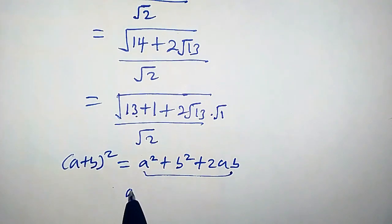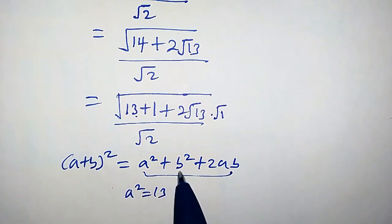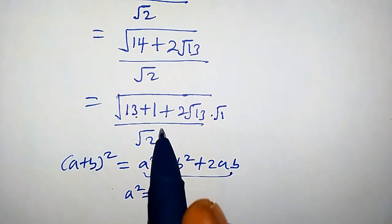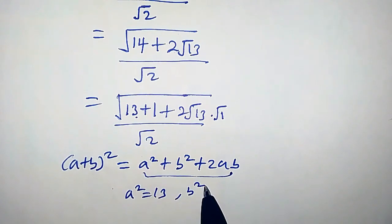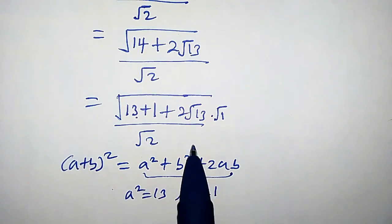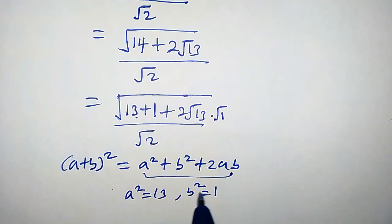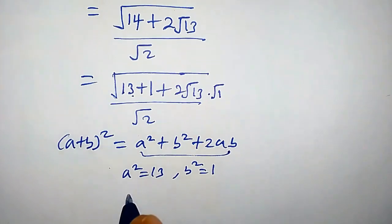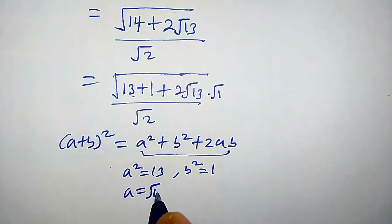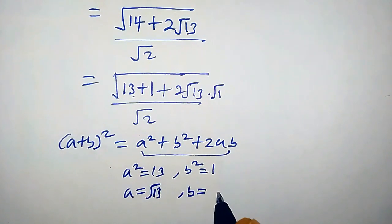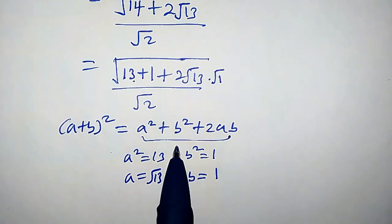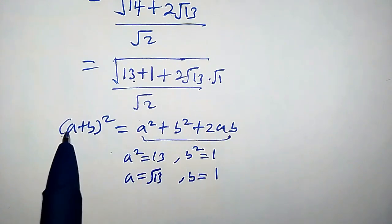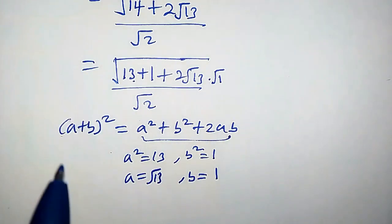By comparing, we observe that a² = 13 and b² = 1, and we have 2ab matching 2√13·1. Clearly, a = √13 and b = √1 = 1. So we can replace the numerator with (a + b)².